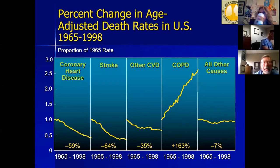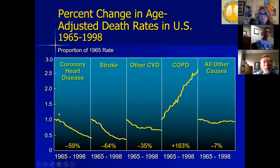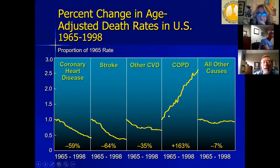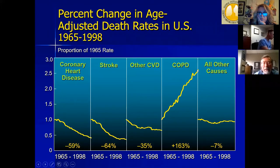This is an older slide, but I keep it because it's instructive. Over a 30-year interval, death rates from coronary disease, stroke, and other cardiovascular diseases went down. But for a long time, the death rate from COPD was significantly increasing. It has started to fall off more recently, but COPD remains a common cause of death in the US.